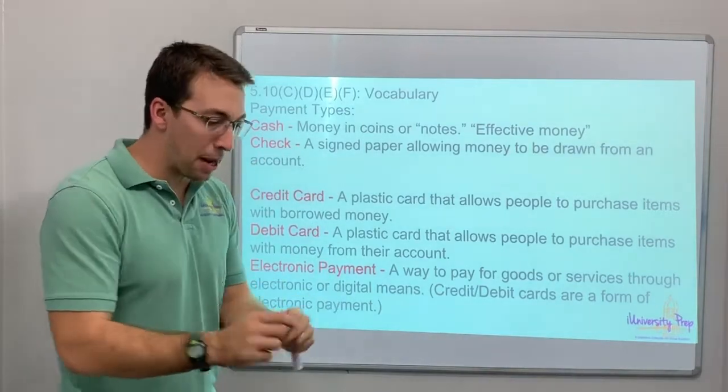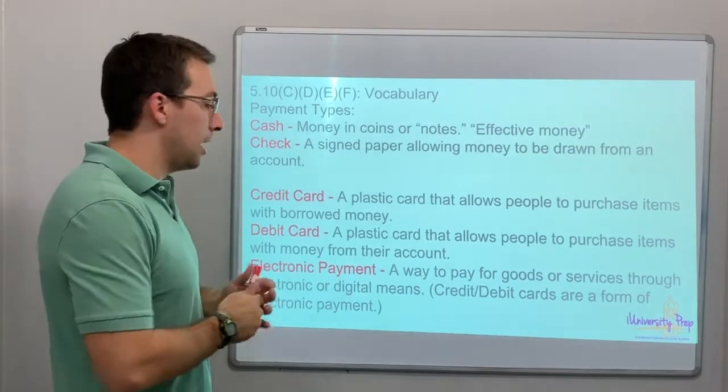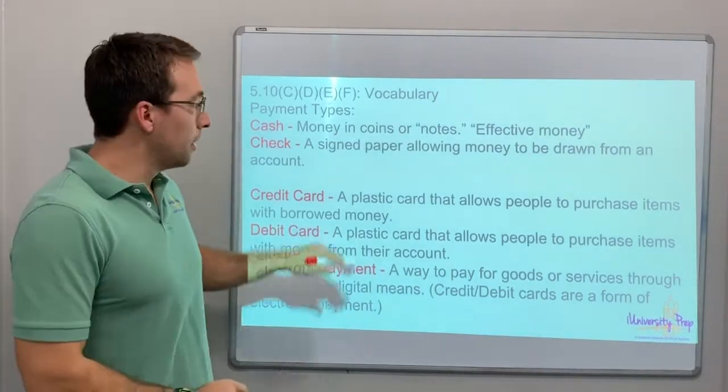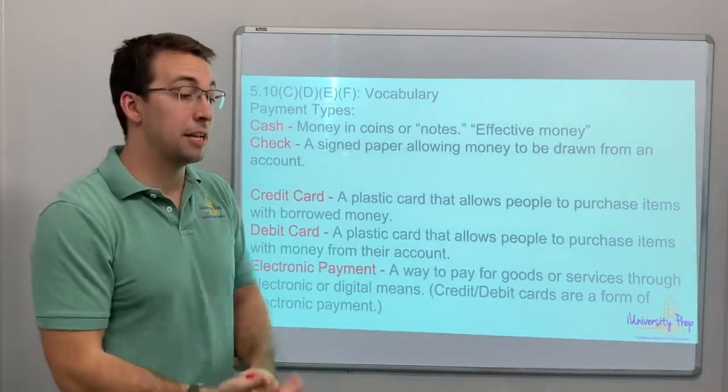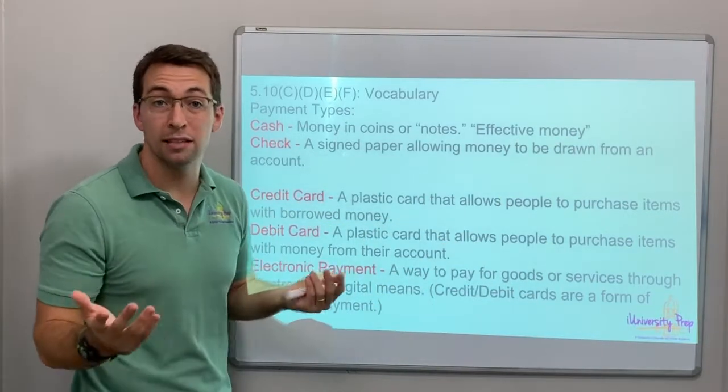A check: It's a piece of paper that you sign. Really, a check could be anything, right? Any piece of paper that you say this is the amount and you sign for it. A signed paper allowing money to be drawn from an account. So I'm going to give you this paper. It's signed and later your bank will take money from my account. That's how checks work.